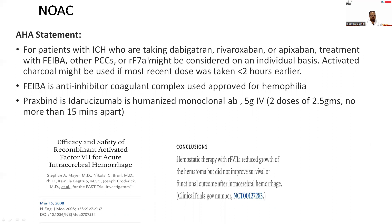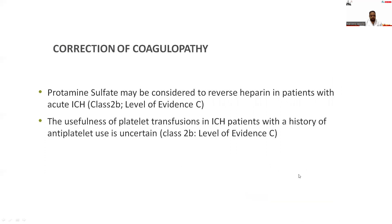For patients with ICH who are taking dabigatran, rivaroxaban, or apixaban, treatment with four-factor prothrombin complex concentrate or recombinant activated factor VIIa might be considered on an individual basis. Activated charcoal should be used if the drug was taken less than 2 hours earlier. FEIBA is an anti-inhibitory coagulant complex approved for hemophilia. Idarucizumab is a humanized monoclonal antibody; 5 grams should be given as two doses of 2.5 grams, not more than 15 minutes apart. The FAST trial showed that recombinant activated factor VIIa reduces hematoma growth but did not improve functional outcome after intracerebral hemorrhage.